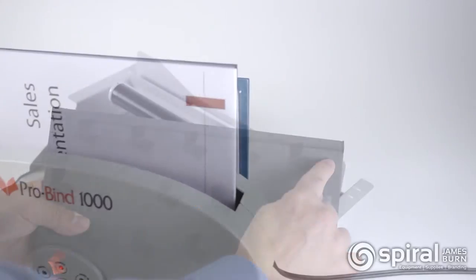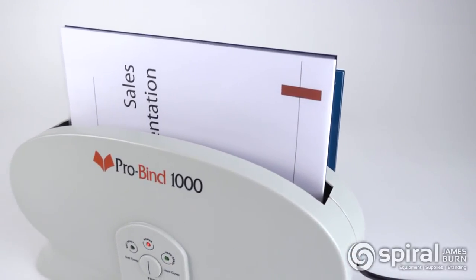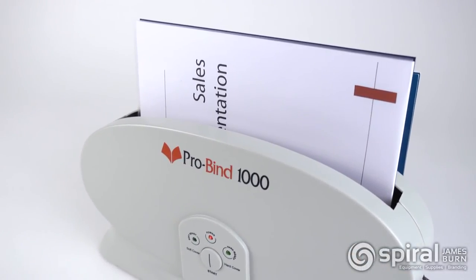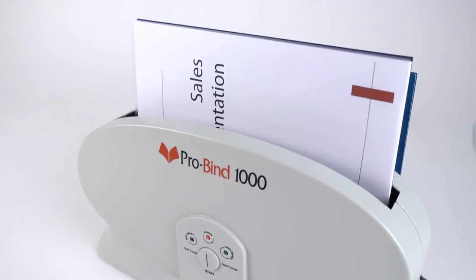The ProBind 1000, a lightweight, portable binding system that fits into any office that needs to create presentation materials that make a great first impression.